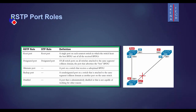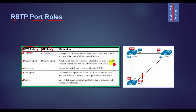RSTP adds three more port roles in addition to the root port and designated port rules defined in STP. There are four port roles in RSTP: root port, designated port, alternate port, backup port, and disabled port. The root port is the port with the best path cost and is selected as the root port. A non-root bridge can only have one root port, and root ports forward data to the bridge. The designated port is a non-root path used as a forwarding port for every LAN segment.